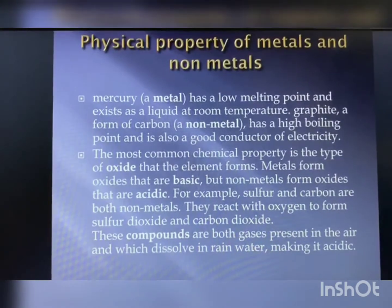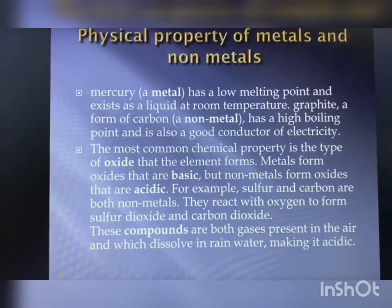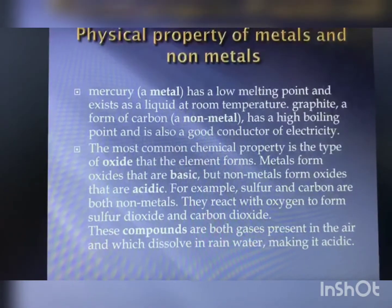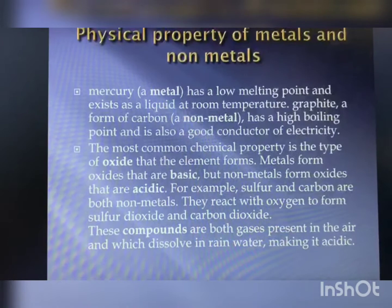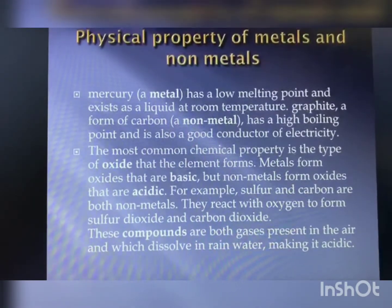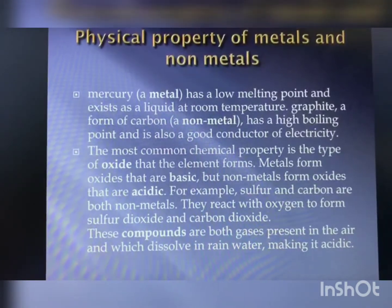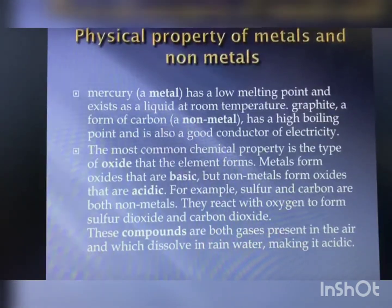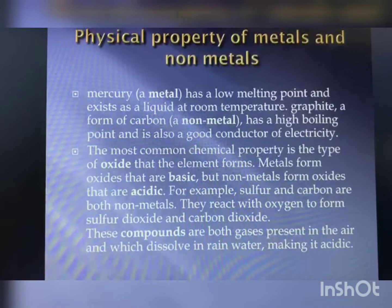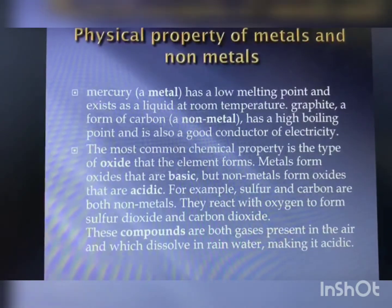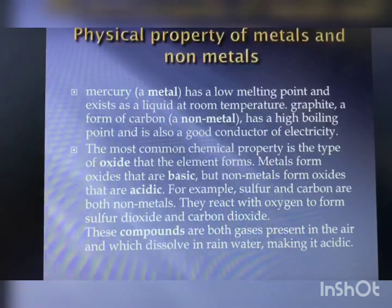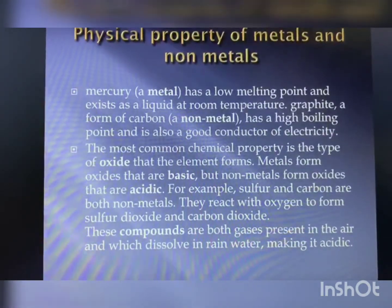The most common chemical property is the type of oxide that the element forms. Metals form oxides that are basic, but nonmetals form oxides which are acidic. For example, sulfur and carbon are both nonmetals; they react with oxygen to form sulfur dioxide and carbon dioxide. These compounds are gases present in the air and dissolve in rainwater, making it acidic.